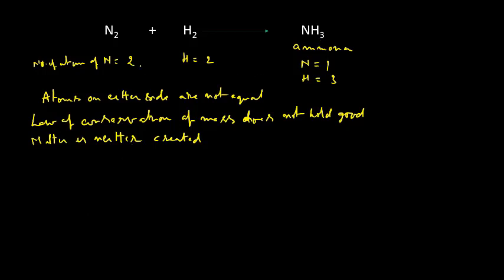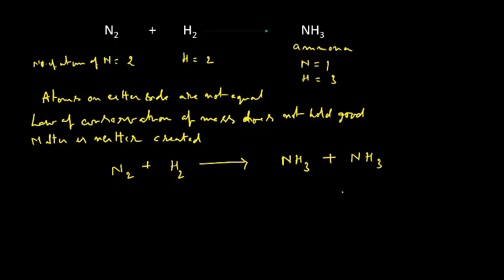Here we have two nitrogen atoms and two hydrogen atoms, whereas on the product side only one nitrogen atom. Therefore, let us change this equation in terms of coefficients only — we are not changing the symbols and formulas. To make two nitrogen atoms, instead of one ammonia molecule let us take two ammonia molecules, making it 2NH₃.